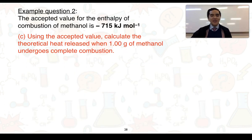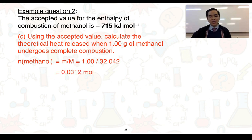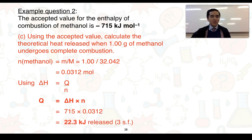For part C, using the accepted value, we calculate the theoretical heat released when 1.00 gram of methanol undergoes complete combustion. First we calculate the number of moles of methanol: using 1.00 gram and the molar mass, we get approximately 0.0312 moles. Using the formula ΔH = Q/n rearranged to solve for Q, and substituting the accepted ΔH value of negative 715 kilojoules per mole multiplied by the number of moles, we end up with 22.3 kilojoules of energy released, to three significant figures.